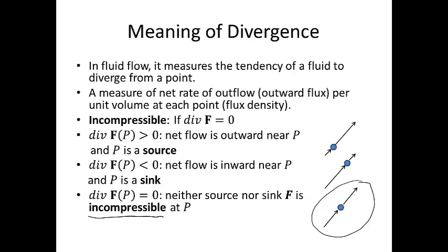If the divergence of f at a point is greater than zero, net flow is outward near p, and p is called a source. So the vectors going into the point are smaller than the vectors coming out.